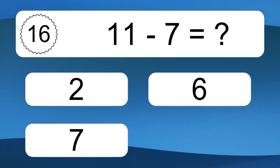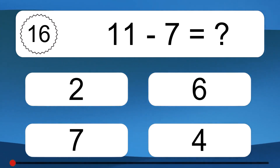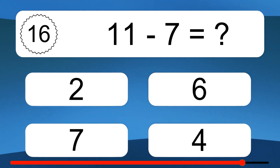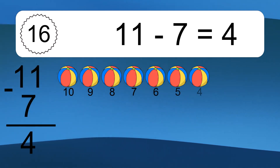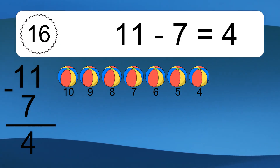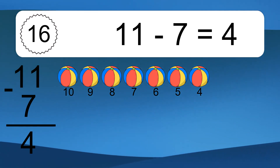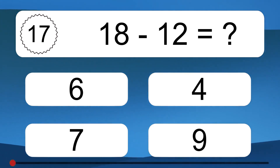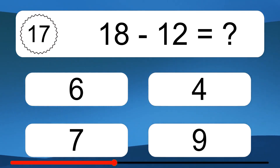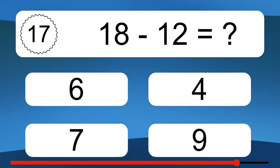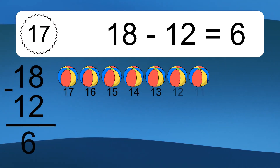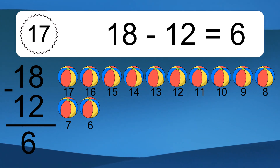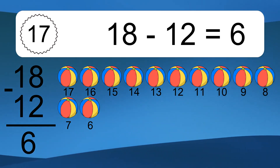11 minus 7 equals what? 11 minus 7 equals 4. Let's count it. 10, 9, 8, 7, 6, 5, 4. 18 minus 12 equals what? 18 minus 12 equals 6. Let's count it. 17, 16, 15, 14, 13, 12, 11, 10, 9, 8, 7, 6.